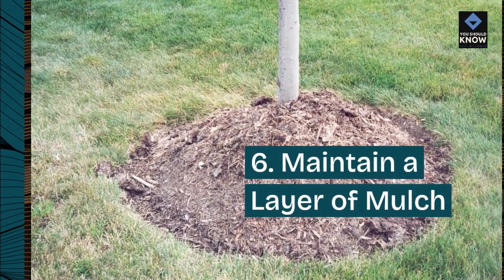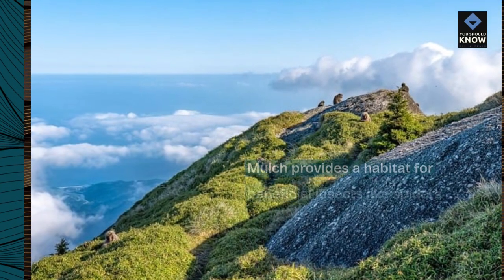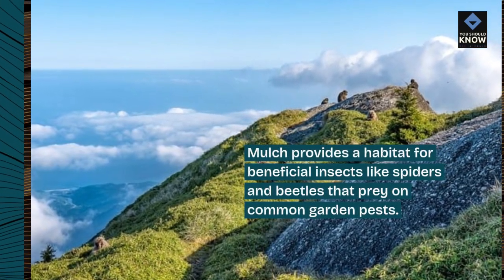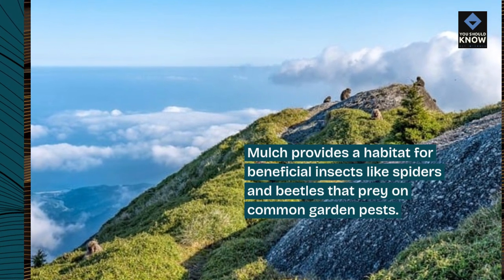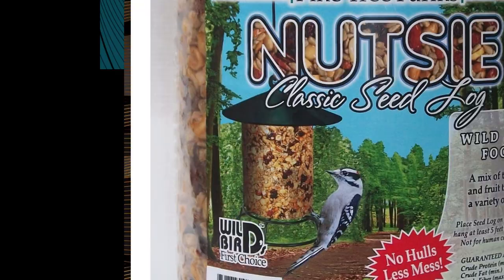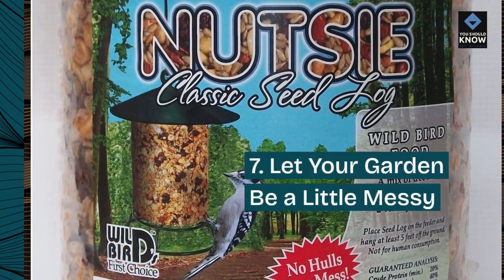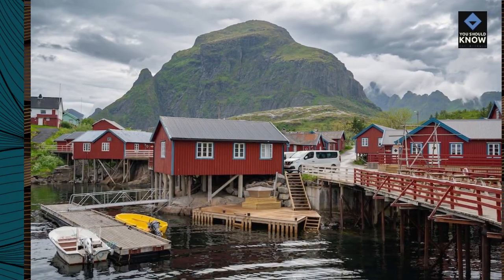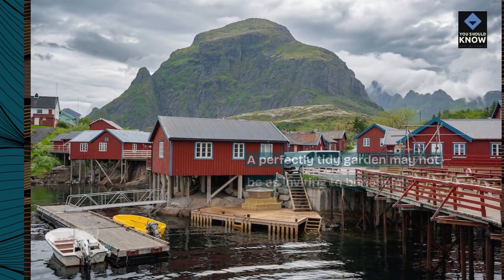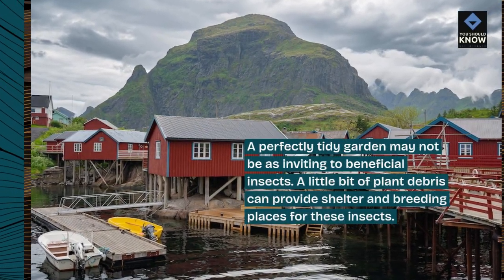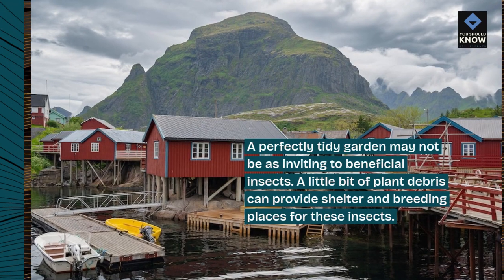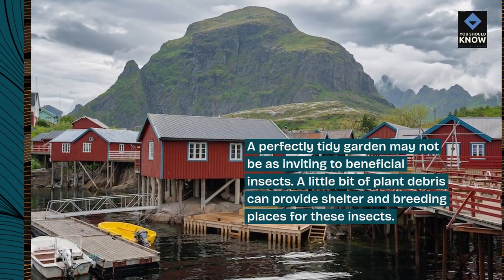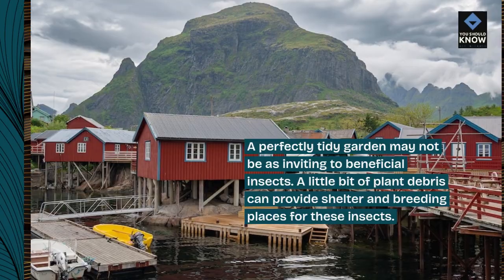Tip 6: Maintain a layer of mulch. Mulch provides a habitat for beneficial insects like spiders and beetles that prey on common garden pests. Tip 7: Let your garden be a little messy. A perfectly tidy garden may not be as inviting to beneficial insects. A little bit of plant debris can provide shelter and breeding places for these insects.